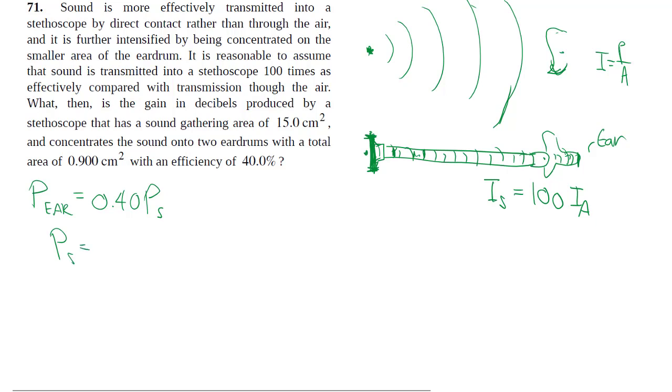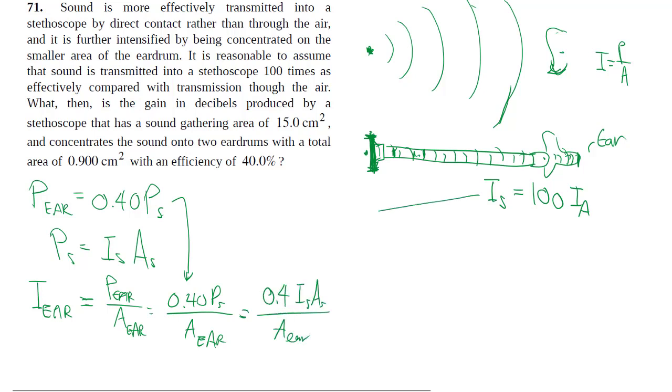And the power of the stethoscope, of course, is the intensity of the stethoscope multiplied by the area which is given to us. So with the stethoscope, what we hear in terms of intensity, putting this in as well, we can keep the centimeter squared because we can cancel that on top and bottom.